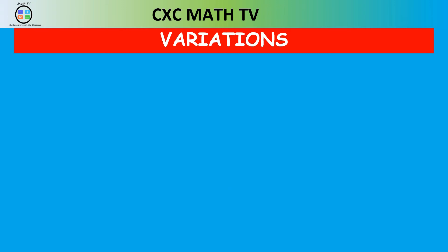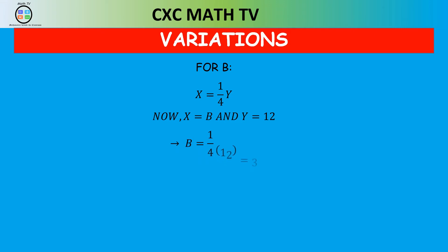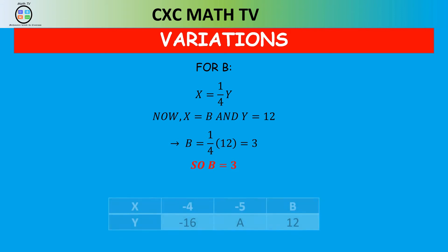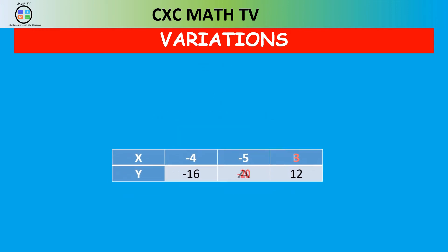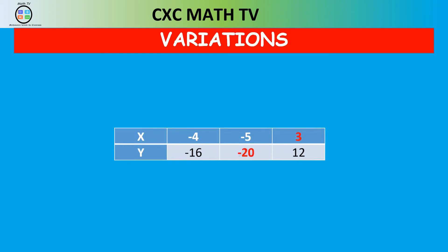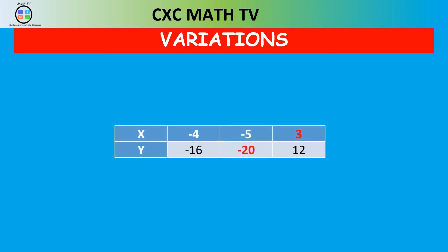To find b: when x is b, the y value is 12. So b equals one quarter of 12, which is 3. We put a equals negative 20 and b equals 3 in the table. Notice that if you divide the x value by the y value you always get one quarter — negative 4 over negative 16, negative 5 over negative 20, and 3 over 12 all equal one quarter. That confirms it is correct direct variation.